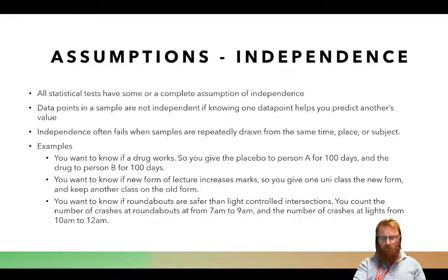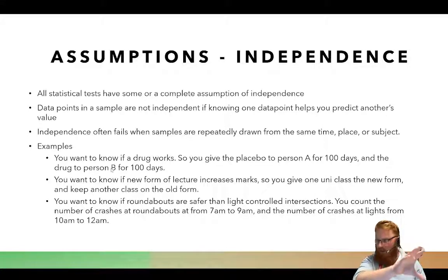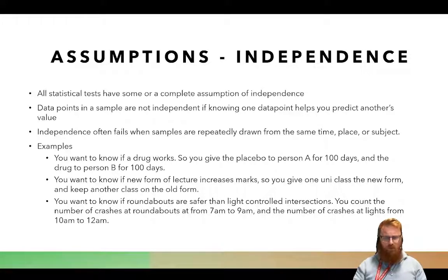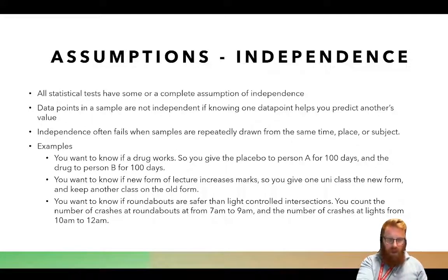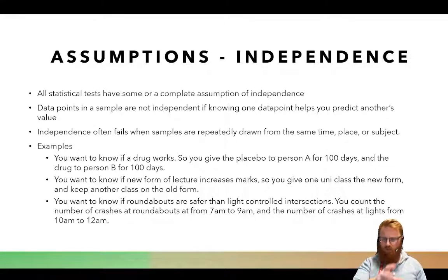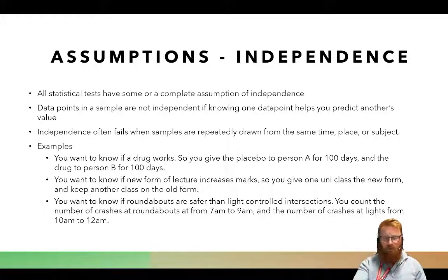For example, if you want to know how a drug works, you give placebo to person A for 100 days and the drug to person B for 100 days, sampling every day — you get 100 data points from person A and 100 from person B. Those data points are not independent. Or maybe you want to know if a new form of lecture increases marks: you give one university class the new form and keep another on the old form. Because you're repeatedly sampling from the same class, these data points are not independent.